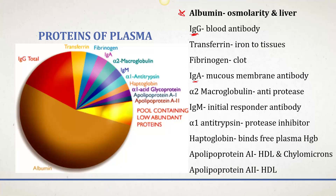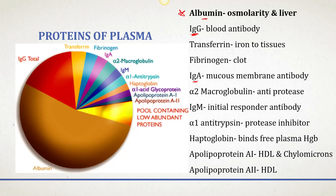Out of all of these proteins, albumin is the one you should really know about, as it is our major blood protein and makes up a majority of the proteins found in the blood.